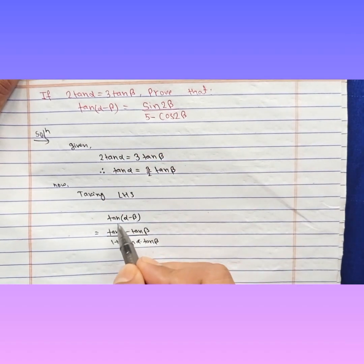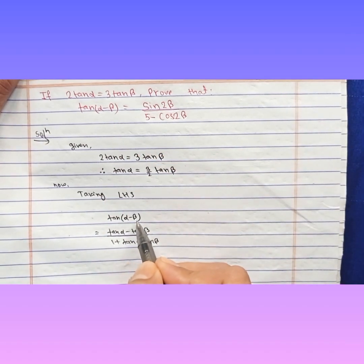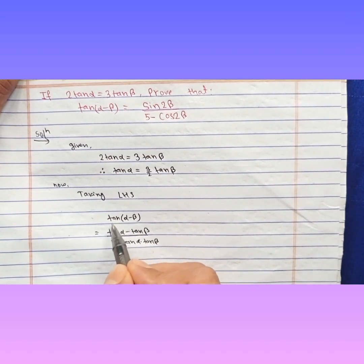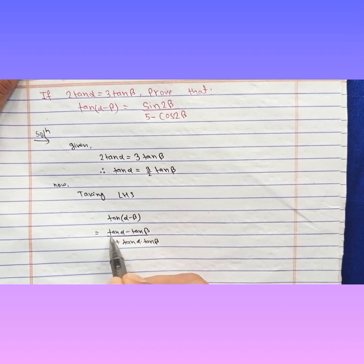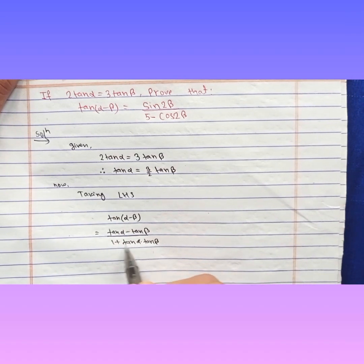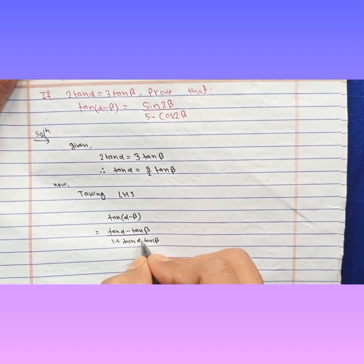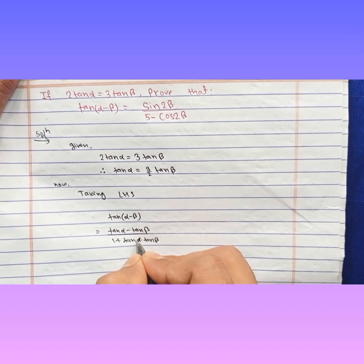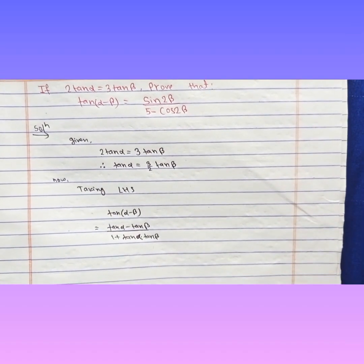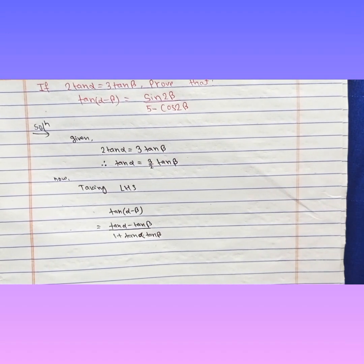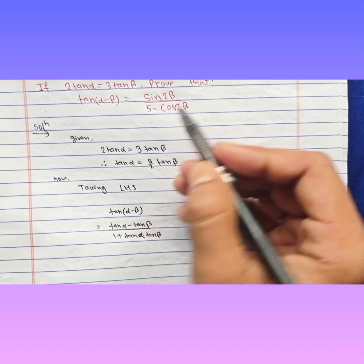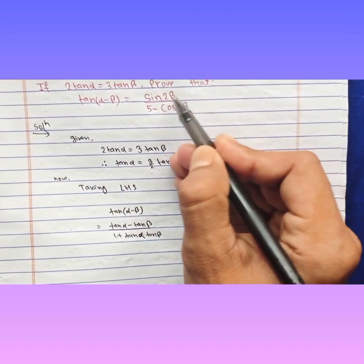Taking the LHS: tan(α - β). Apply the tan(A - B) formula. It becomes tan α minus tan β, upon 1 plus tan α into tan β. Note this formula carefully.